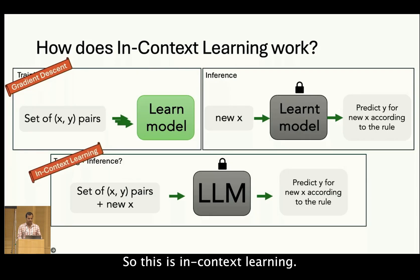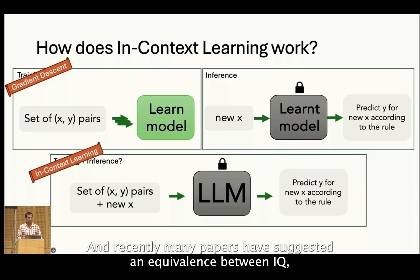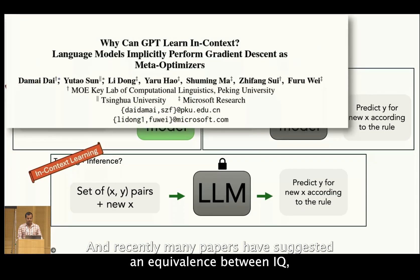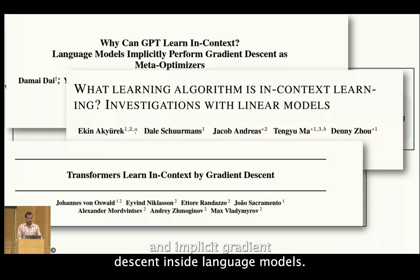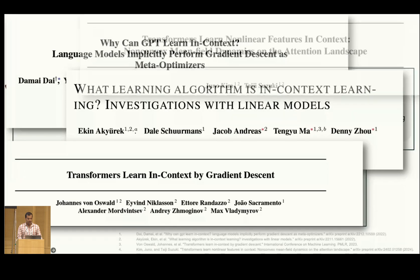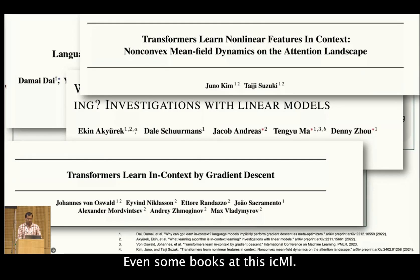This is in-context learning, and recently many papers have suggested an equivalence between ICL and implicit gradient descent inside language models — even some works at this ICML.